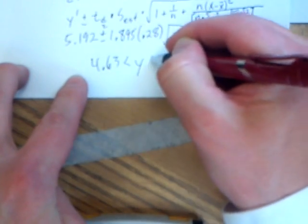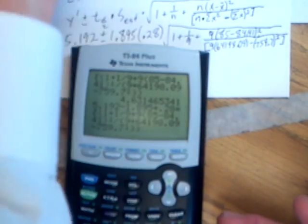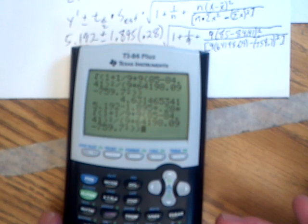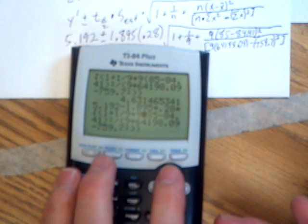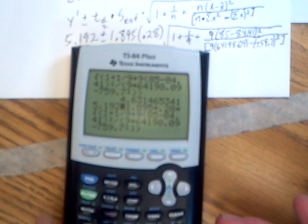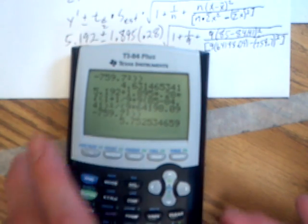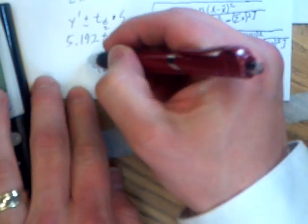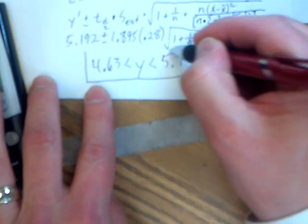4.63 is less than Y, is less than, and then you just hit second, enter. And go back up and change the minus sign to a plus, and hit enter, and you get 5.75. This is the 90% prediction interval about your variable Y when X equals 85.